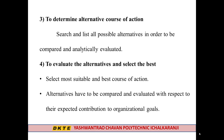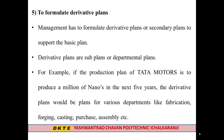The fourth step of planning is to evaluate the alternatives and select the best. We select the most suitable and best course of action. Alternatives have to be compared and evaluated with respect to their expected contribution to organizational goals. From all the alternatives identified in step three, we find the most suitable and best alternative for achieving the company's objective.